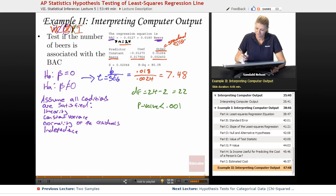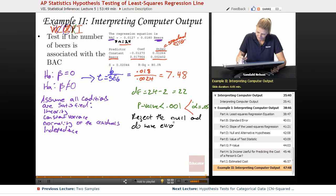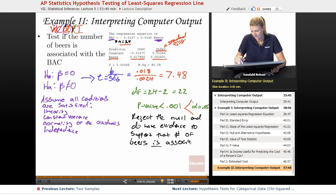And lastly, let's interpret. So let's assume that alpha is 0.05, and then the p-value is obviously much less than 0.05. So we reject the null and do have evidence to support that number of beers is associated or correlated with the blood alcohol content. Perfect.